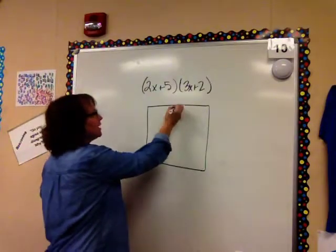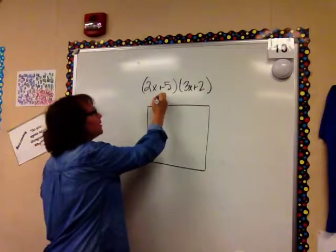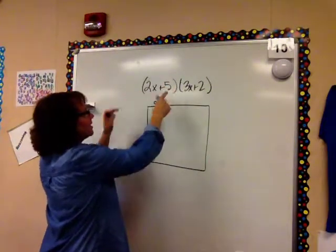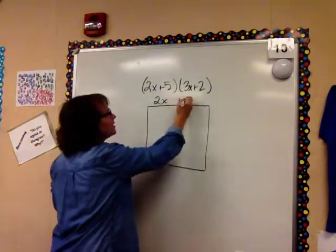We're just going to use this area model. So I'm going to label this side, my length, as 2x plus 5.